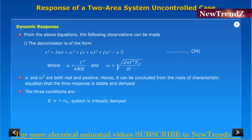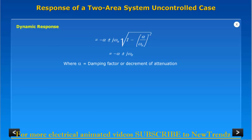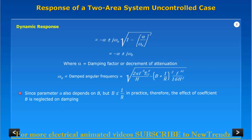The three conditions are: if alpha equals omega n, the system is critically damped; if alpha is greater than omega n, the system becomes over-damped; if alpha is less than omega n, then S1,2 equals minus alpha plus or minus j times the square root of omega n squared minus alpha squared. Here alpha is the damping factor or decrement of attenuation, and omega is the damped angular frequency. Since the parameter alpha also depends on b, but b is less than or equal to 1/r in practice, the effect of coefficient b on damping is neglected.